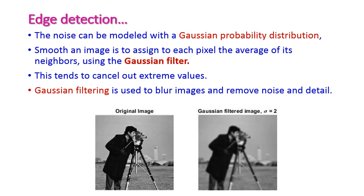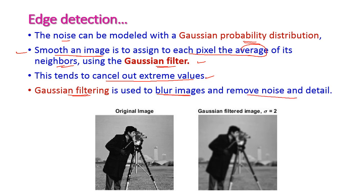To overcome this noise, we can use Gaussian probability distribution. It smooths an image by assigning each pixel the average of its neighbors. This method is called Gaussian filtering, and it is used to cancel out extreme values in the edges. Gaussian filtering is used to blur the image and remove noise and details.